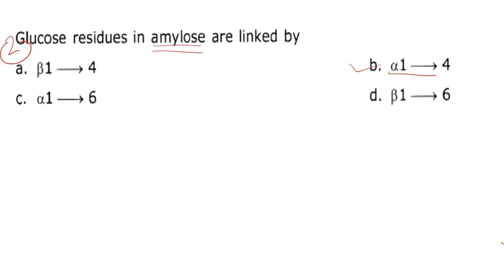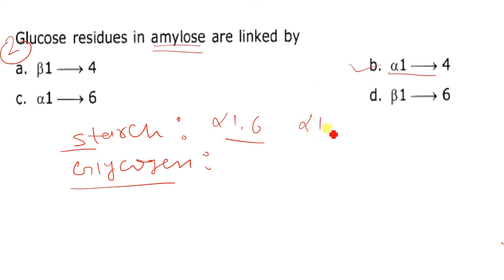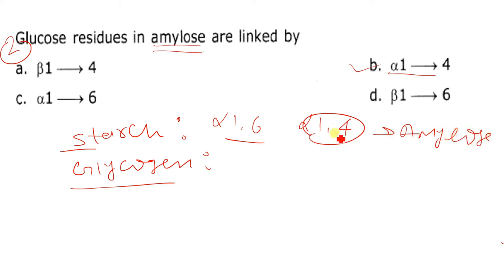Amylose is present in both starch and glycogen. Starch is a reserved carbohydrate in plants and glycogen is the reserved carbohydrate in animals. Both starch and glycogen are branched polysaccharides with alpha-1,6 branching, while the linear chain is joined by alpha-1,4 linkages. The alpha-1,4 portion forms the amylose part, and the alpha-1,6 branch forms amylopectin.